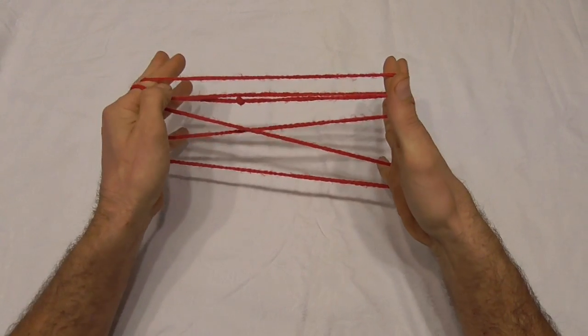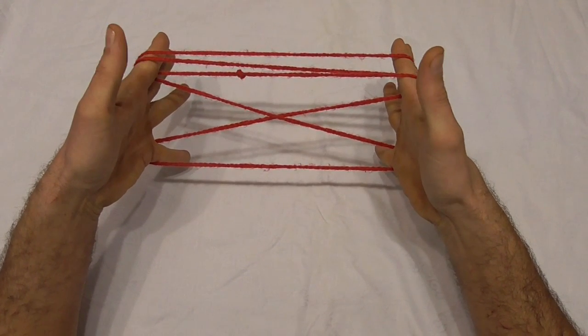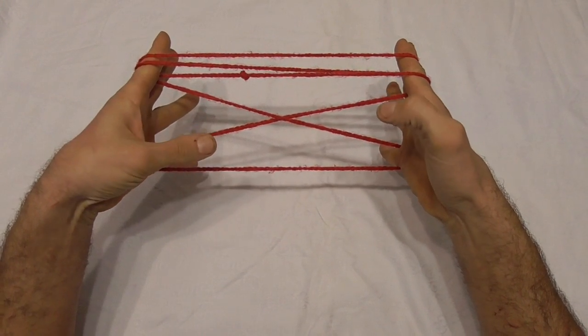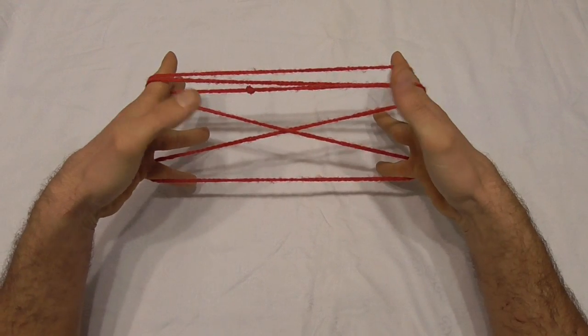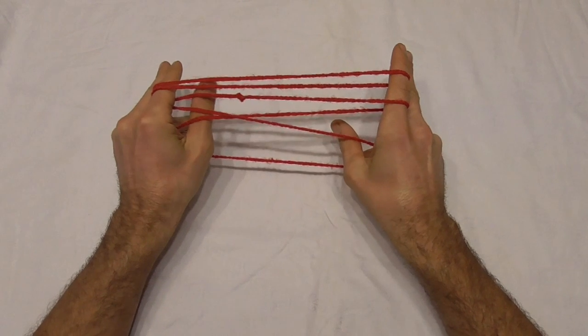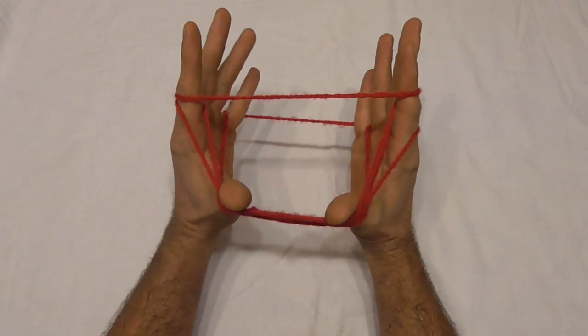If I rotate my hands forwards like this, what I want to do is I want to take my thumbs and put it through that bottom loop where my little fingers are and pick up all the strings except for the top pointer finger string and bring it back.